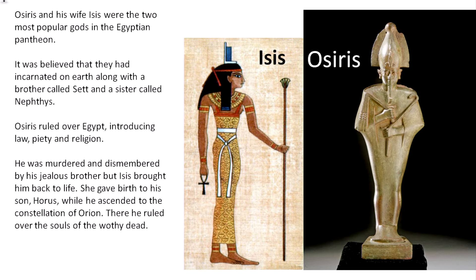Osiris and his wife Isis were the two most popular gods in the Egyptian pantheon. It was believed that they had incarnated on Earth along with a brother called Set and a sister called Nephthys. Osiris ruled over Egypt introducing law, piety, and religion — he is regarded as the first good king. According to the hermetic writings, the earth was in chaos with much bloodshed and lawlessness, so the earth prayed to God to send his seed, and God sent Osiris.